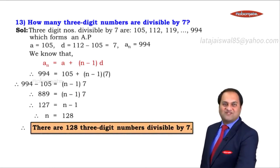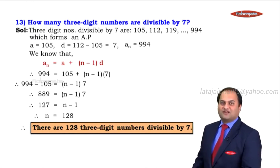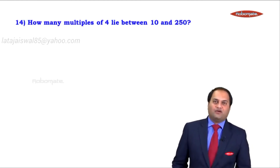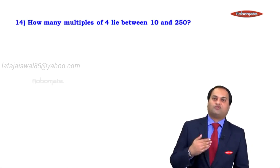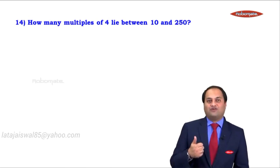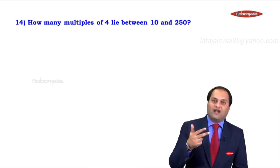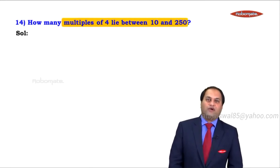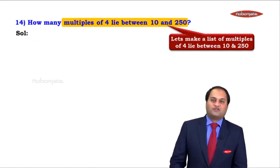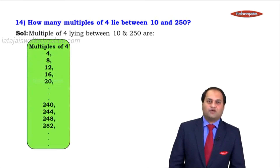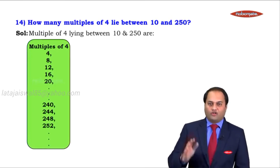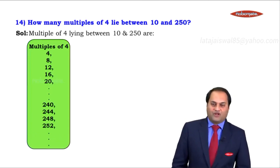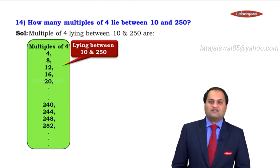Let's go through one more similar sum to revise. How many multiples of 4 lie between 10 and 250? Again, we need to find N. For that we need A, D, and AN — so we form an AP. The condition is multiples of 4 between 10 and 250. The first multiple of 4 greater than 10 is 12.